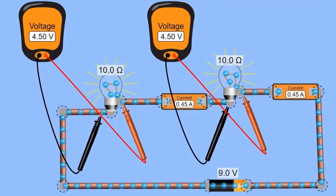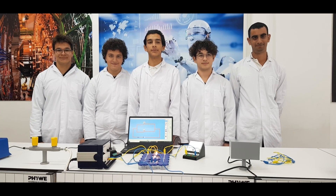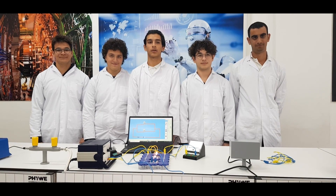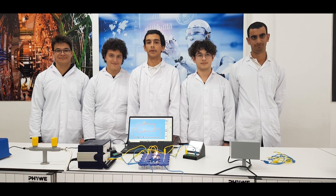If bulbs are connected in series, the voltage across each bulb can be different, even though the current is the same through all of them. When bulbs are put in parallel, the voltage across each is the same.